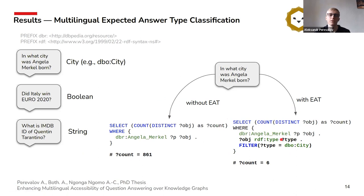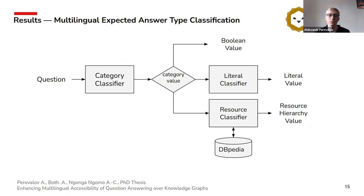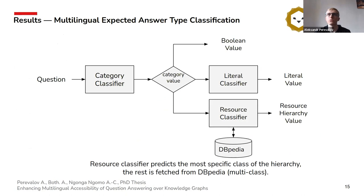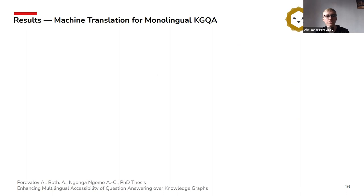In this regard, we use a multilevel hierarchical classification approach. We used three multilingual language models and participated with this architecture two times in the Semantic Answer Type Prediction challenge, where we had reasonable results that are comparable to monolingual models, despite using a multilingual approach.